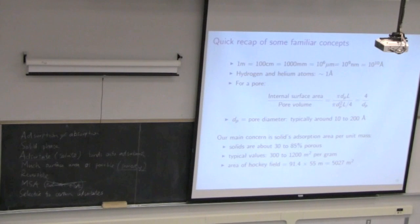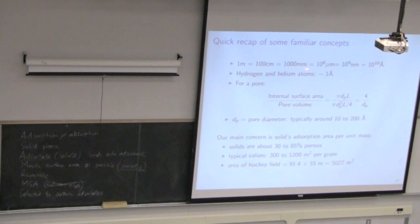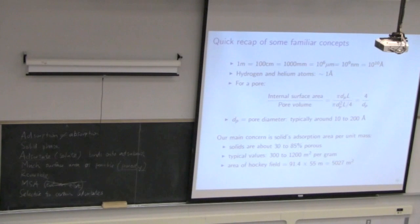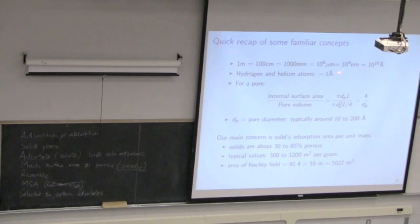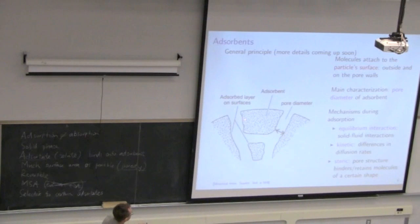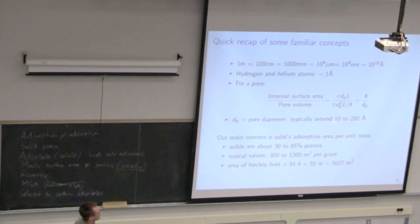Let's get an idea of the sizes involved. We're comfortable with meters, centimeters, and millimeters. Going further down the scale: nanometers are 10⁻⁹ meters. Our most common unit here is the angstrom, which you'll know from chemistry when looking at crystal structures of solids. The pore diameters of these adsorbents range in order of magnitude from about 10 to 200 angstroms.